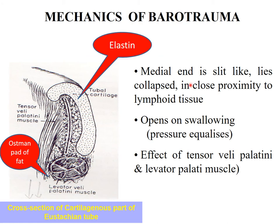The medial end of the eustachian tube is slit-like and normally collapsed, in close proximity to the lymphoid tissue and the Ostmann pad of fat. The two muscles acting on the cartilaginous portion of the eustachian tube are the tensor veli palatini and the levator veli palatini. This tube remains closed normally and opens on swallowing to equalize pressure.